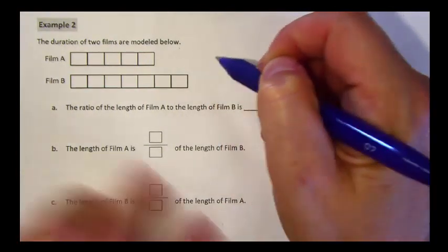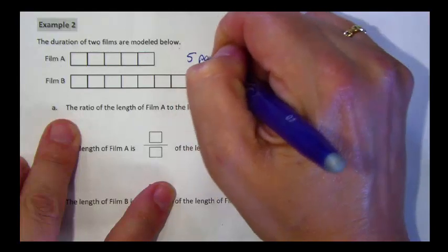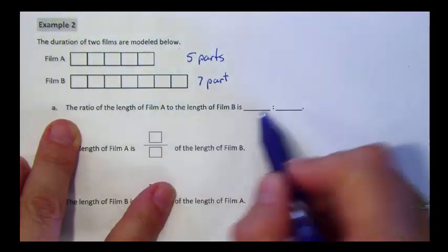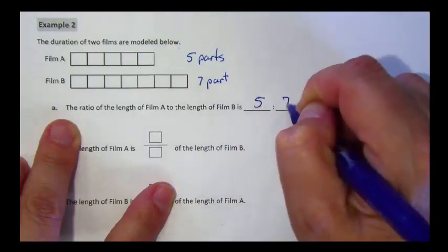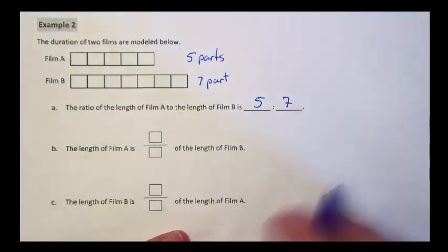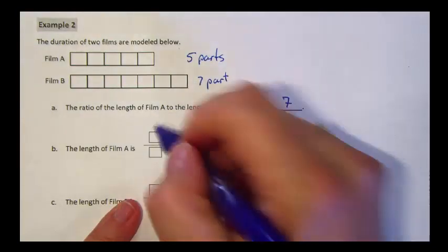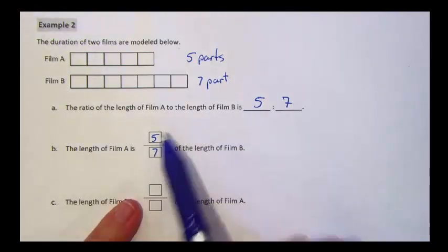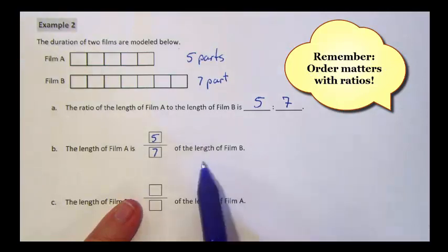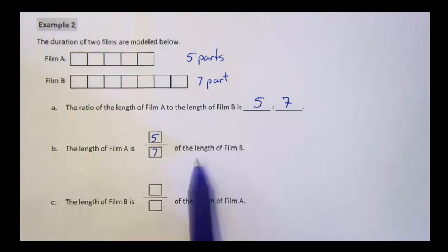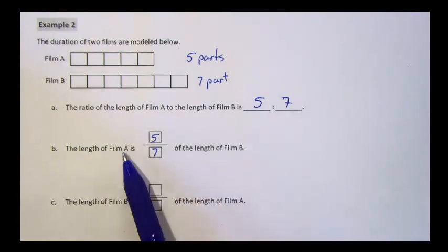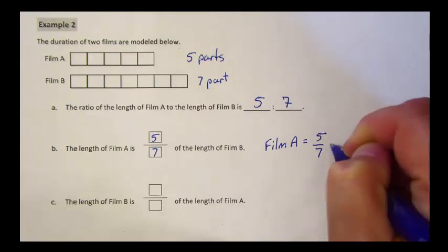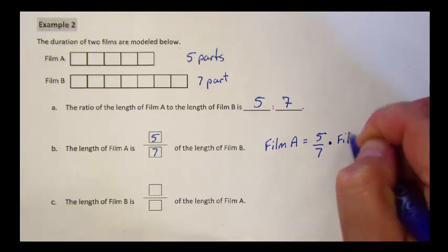If we write the ratio of film A to film B, we know film A is five parts and film B is seven parts, so the ratio is five to seven. To find the value of this ratio, the length of film A is five-sevenths the length of film B. The numerator is the first part of the ratio and the denominator is the second part. We could write this as an equation: Film A equals five-sevenths of film B.